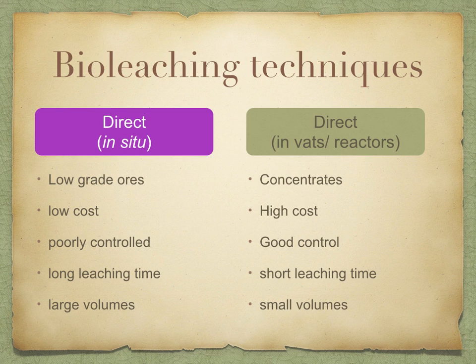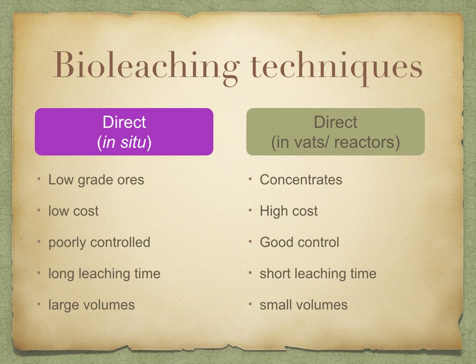Finally, bioleaching can either be done in-situ, which is direct bioleaching, or indirect, which is in vats. Comparing the two: direct involves low-grade ores, it's low cost, but it is poorly controlled and has a long leaching time, and uses large volumes. Indirect involves concentrates, it's high cost, but there is good control, a short leaching time, and small volumes.